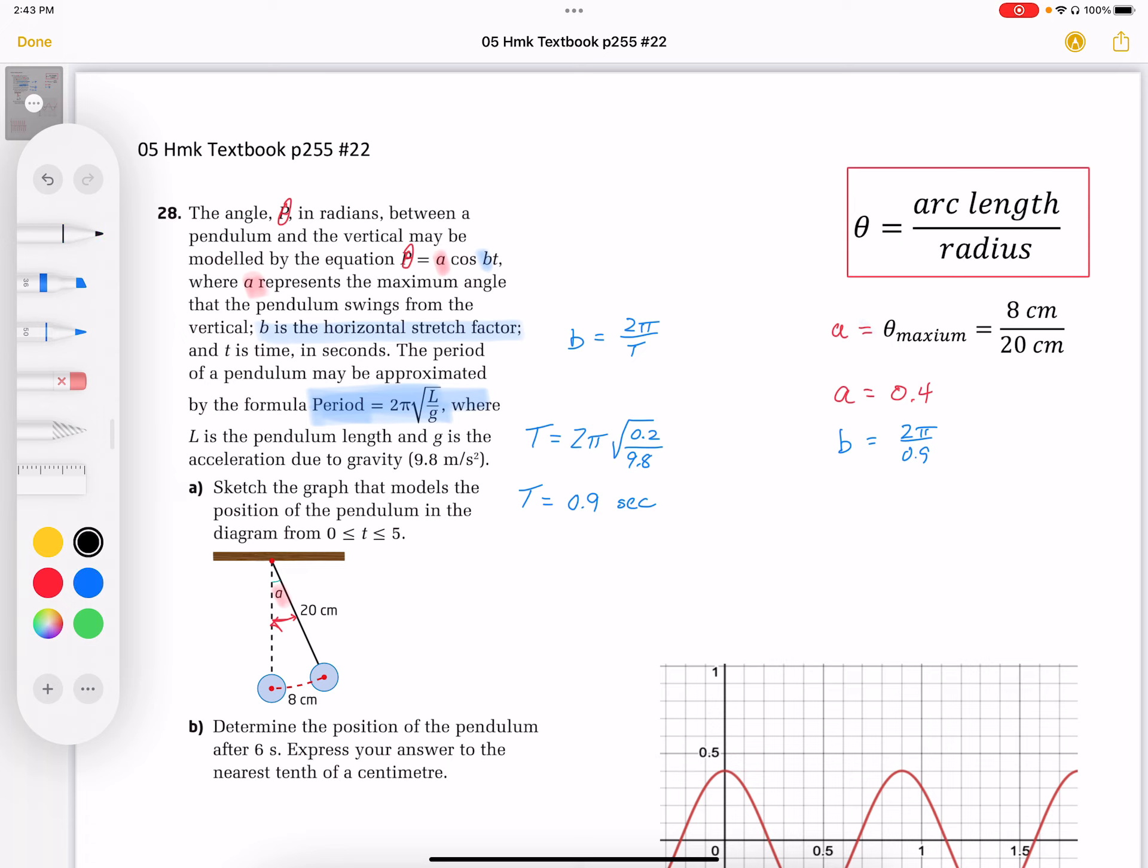So now I can write my equation. The angle theta is equal to A, which is 0.4, cosine of Bt. And the B value we know is 2 pi over 0.9. So there it is. There's my equation that I'm going to need.